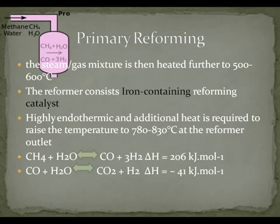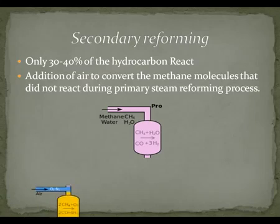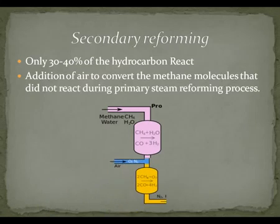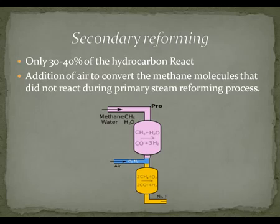Moving on to the secondary reformer: only 30 to 40 percent of the hydrocarbons react in the primary reformer. So the secondary reformer is needed to have the rest of the unreacted hydrocarbons blended with air for additional yield of hydrogen gas.